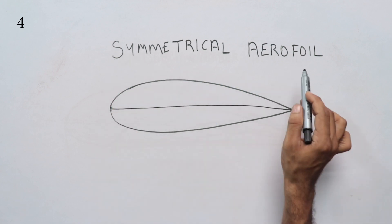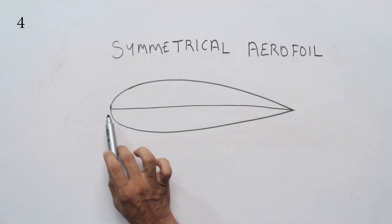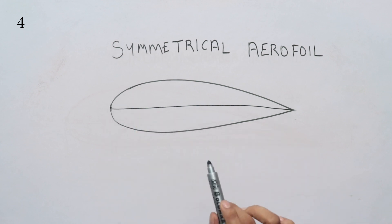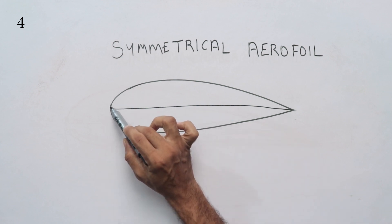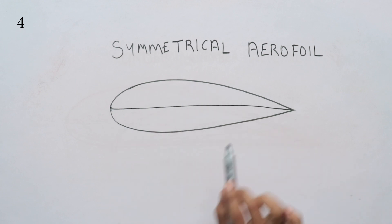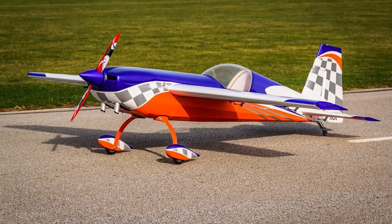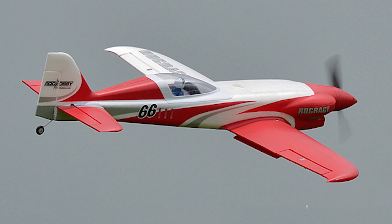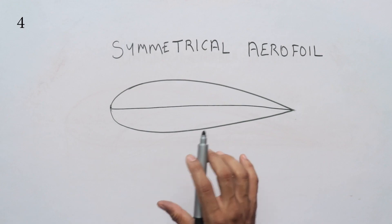The symmetrical Aerofoil has identical upper and lower surface curves — the upper half and lower half are the same. This type is used for aerobatic planes, 3D flying planes, precision-type flying, and pylon racer planes. It belongs to the aerobatic category of aircraft.